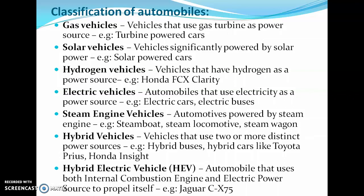Hybrid Vehicles use two or more distinct power sources, such as hybrid buses and hybrid cars like the Toyota Prius and Honda Insight. Hybrid Electric Vehicles use both an IC engine and an electrical power source to propel themselves — an example is the Jaguar CX-75.